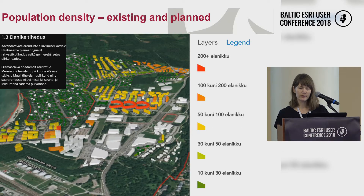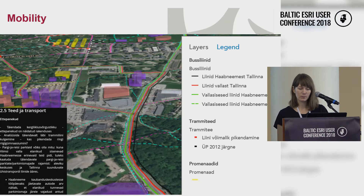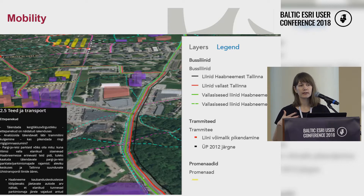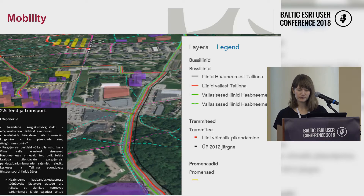We wanted to calculate the population density — what it is now and what the new visions will bring — also shown with colors. Then we put in the mobility corridors. As I said, this is already the work with the master plan, so we can put there the corridors we have today and start to analyze where we see we can develop new corridors. Always in parallel, we can have this textual part and explain what everything means.